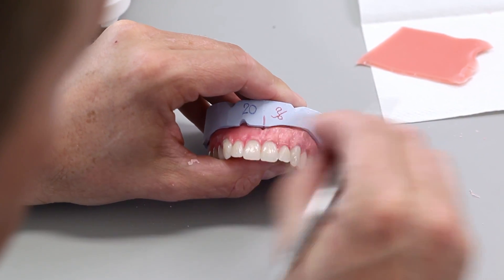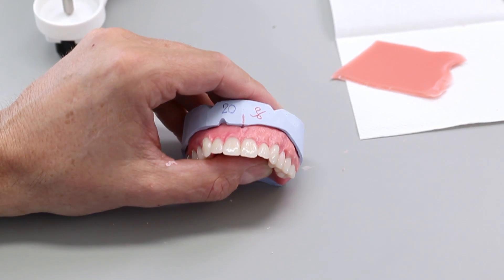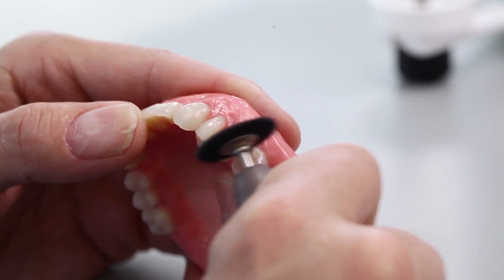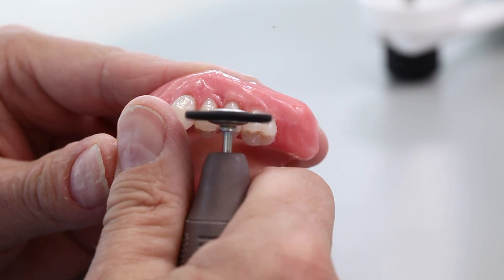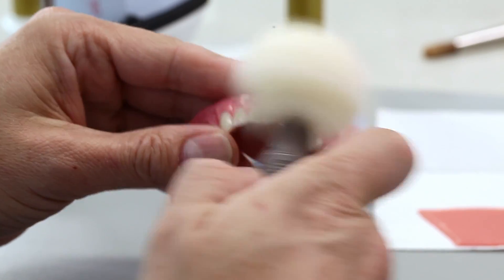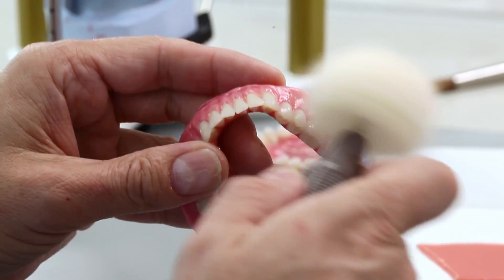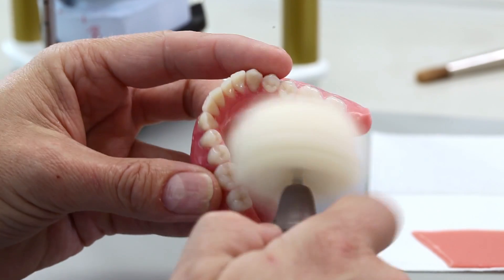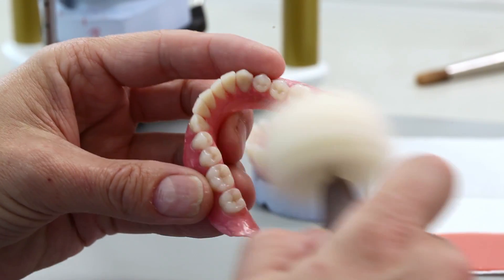The gingival design should correspond with the completed work as closely as possible. Our tip: use a synthetic hairbrush to remove wax residue from the teeth. Polish the wax to a high gloss using a foam polishing pad. A polished surface is pleasant for the patient and simplifies the completion of the denture later on.